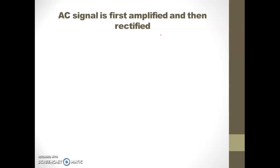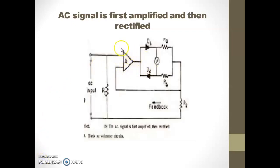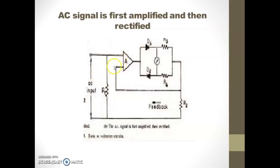Next, in the second method, the AC signal is first amplified and then rectified. In this method, the AC input signal is first amplified before the rectification. As shown in the figure, it uses an AC amplifier with negative feedback. The AC signal — which is a small signal — is amplified first and then rectified after sufficient amplification. The AC amplifier requires very high open-loop gain and a large amount of negative feedback to overcome the non-linearity of the rectifier diode.